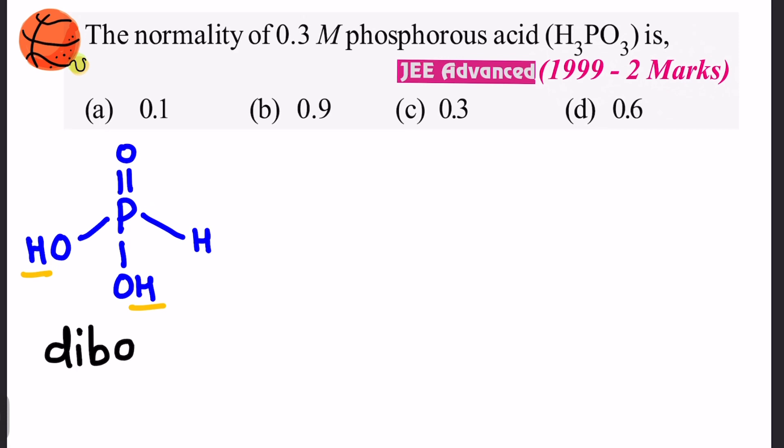And for dibasic acid, the n-factor is equal to 2. Now coming to the formula of normality, the formula is normality is equal to molarity into n-factor.